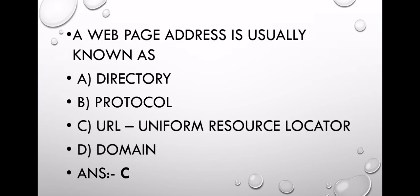The next question: A web page address is usually known as? Option A, Directory, Option B, Protocol, Option C, URL, Option D, Domain. What is the answer? Option C, URL. The URL is Uniform Resource Locator. This is very important.